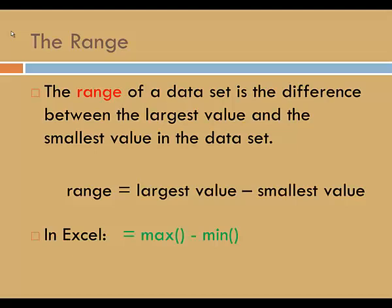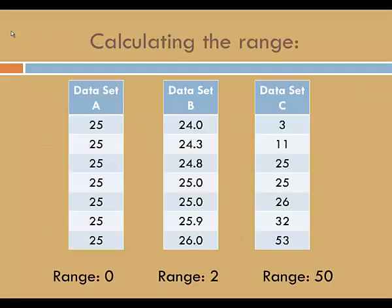In Excel, we can use the MAX and MIN functions, and then take the difference. In data set A, the range is zero. In data set B, the range is 2 — 26 minus 24 is 2. In data set C, the range is 50. The range allows us to distinguish between the three data sets. As you go from left to right, the range increases. There's more variety in data set C than there is in data set A or B.